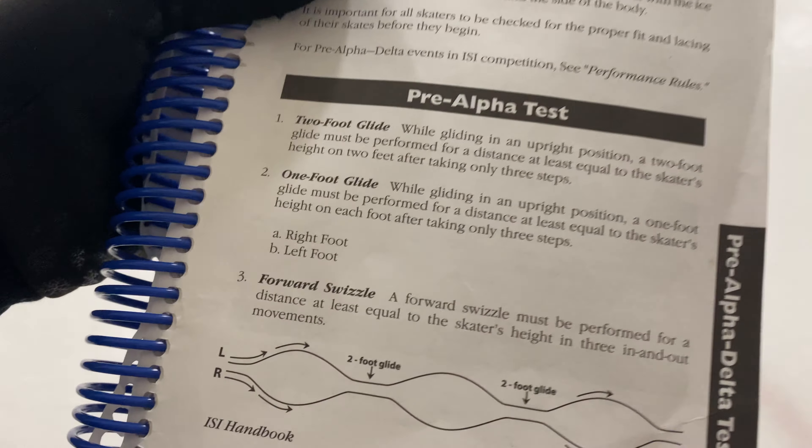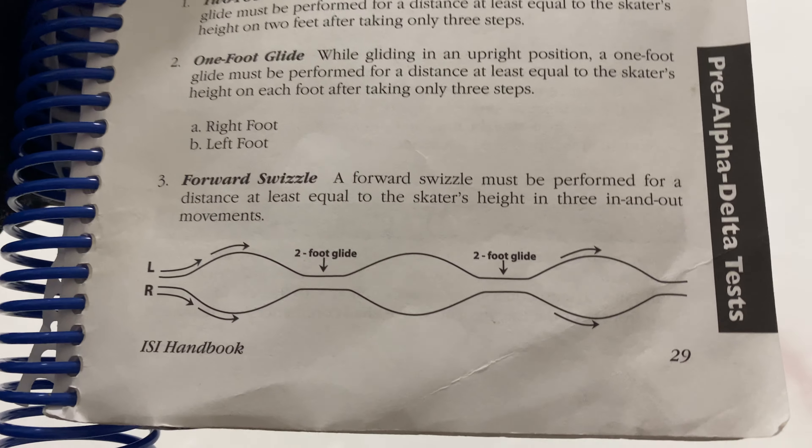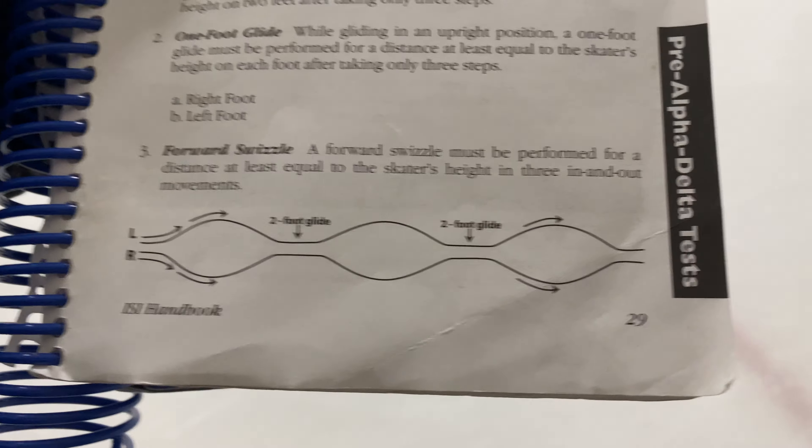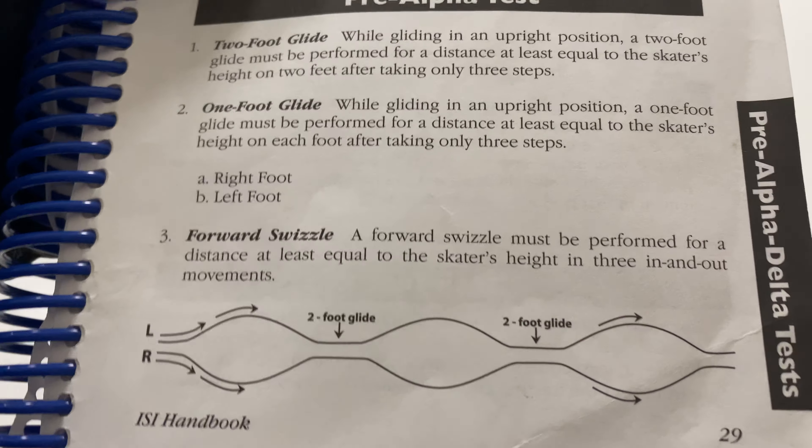Next I will show you a forward swizzle. A forward swizzle is performed for a distance facing to the skater's height on three in-and-out points.